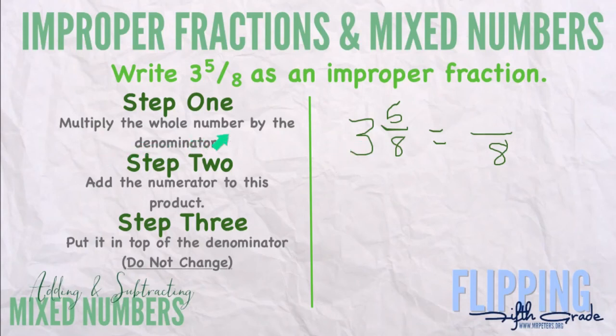It says multiply the whole number, 3, times the denominator, 3 times 8. 3 times 8 is 24. And then it says add the numerator. So 24 plus 5 is 29. Put it on top. And there you go. I have now created an improper fraction from the mixed number 3 and 5 eighths. So again, you just follow the steps, multiply the whole number by the denominator, add the numerator.